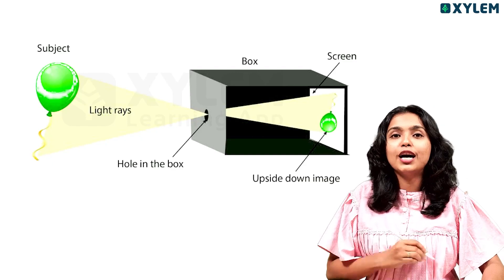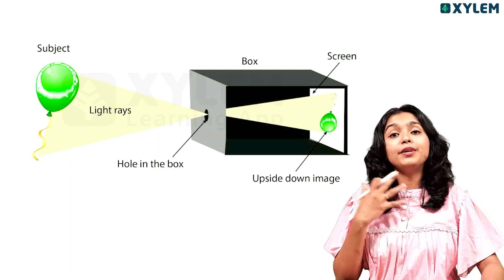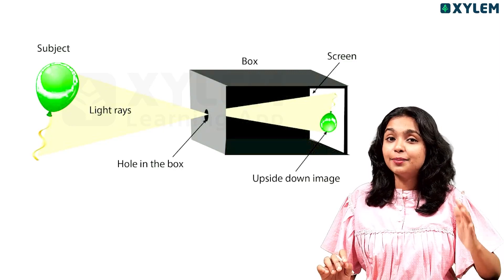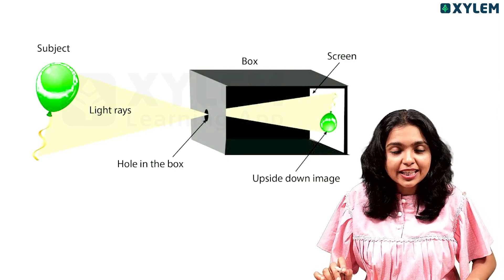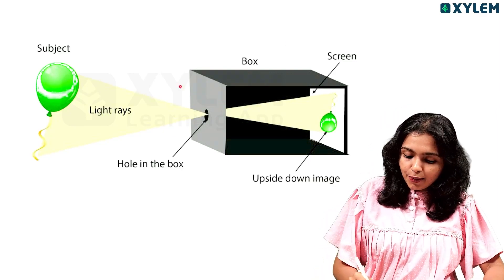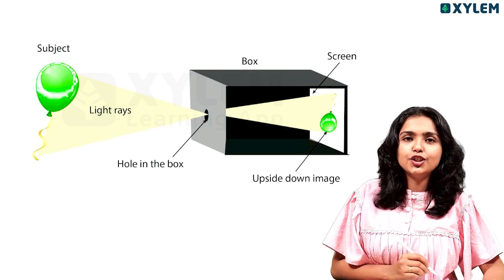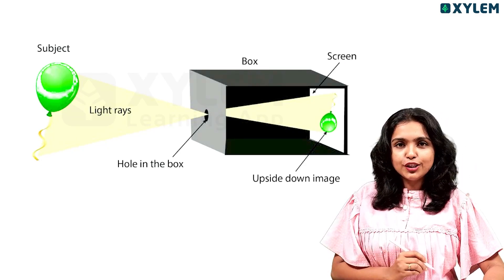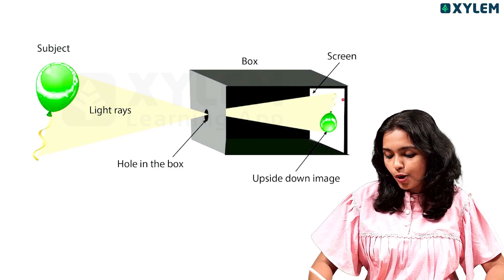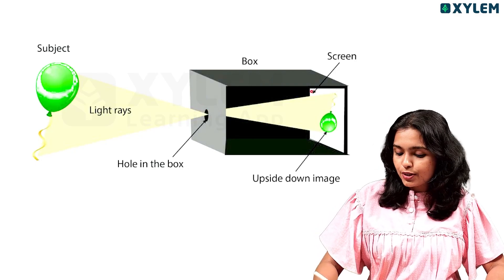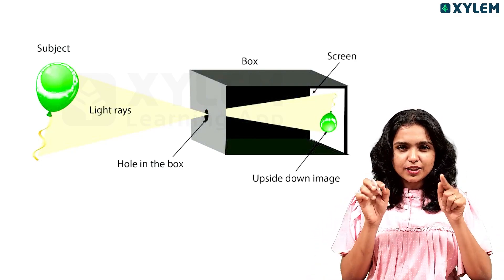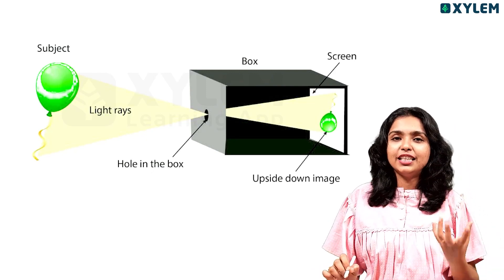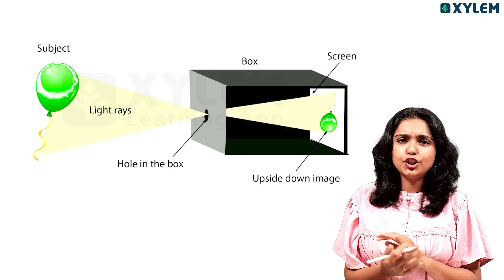We will take two boxes to create a pinhole camera, as shown in our textbook. We will take one box on the right side and make a hole on the opposite side. On the opposite side there is a square. I am going to make a laminated paper sheet to cover it.